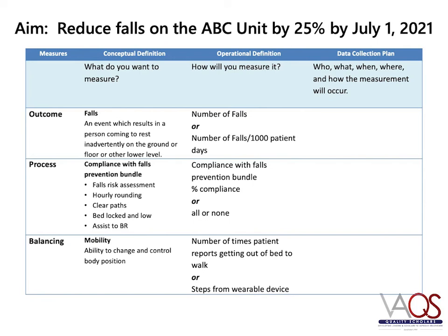In unit-level improvement work, you'll likely choose only one way to operationalize a measure. For example, falls is conceptually defined as an event which results in a person coming to rest inadvertently on the ground, floor, or other lower level. It can be operationally defined as the number of falls for a certain period of time — by day, week, or month — or as the number of falls per thousand patient days, again by day, week, or month.